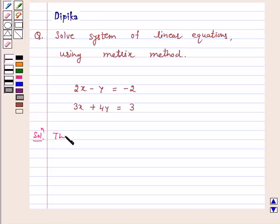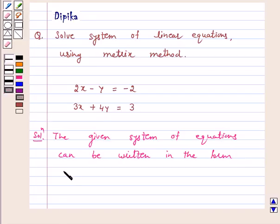The given system of equations can be written in the form Ax is equal to B where